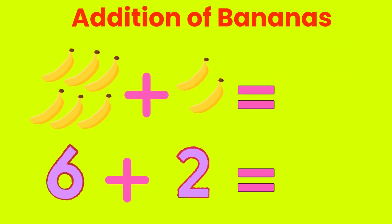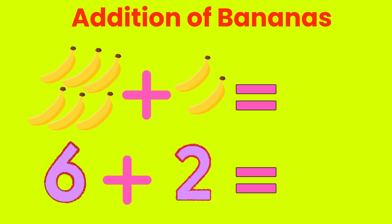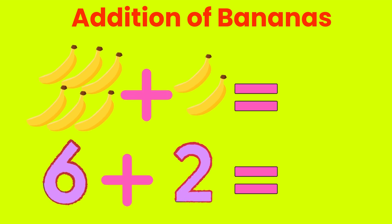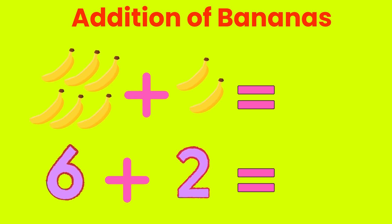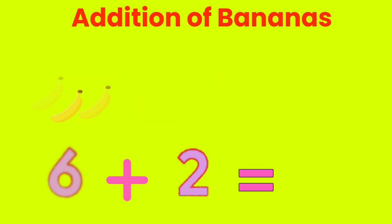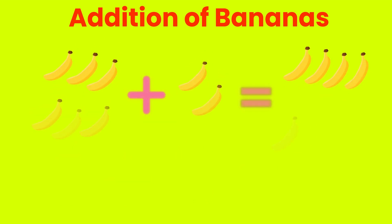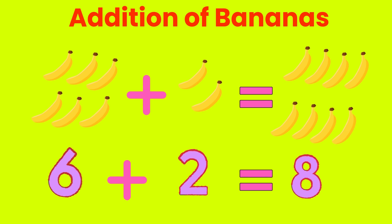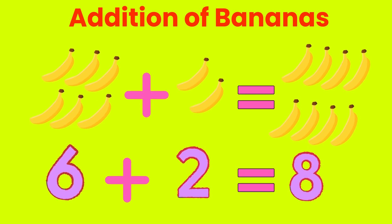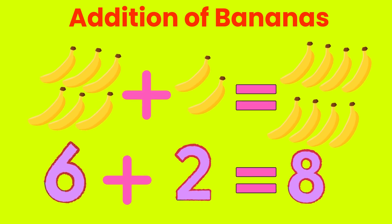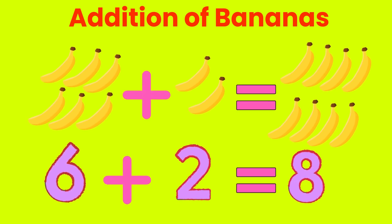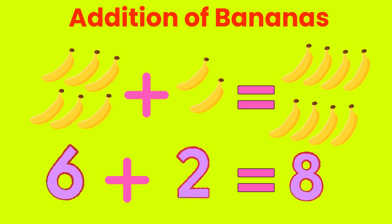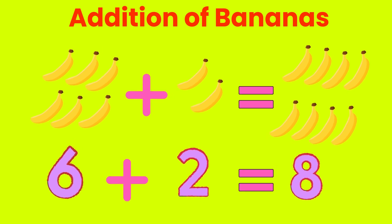Let's do addition of bananas. 6 bananas plus 2 bananas. Add 6 plus 2. Answer is... 6 bananas plus 2 bananas. Total is 8 bananas. 6 plus 2 is 8.